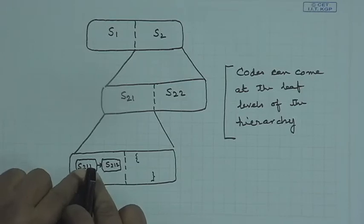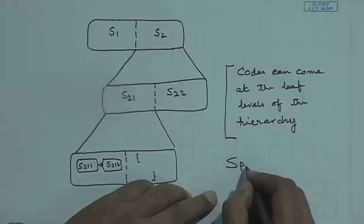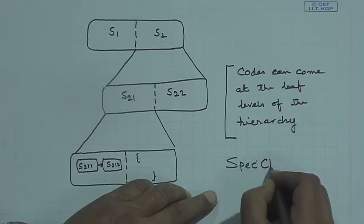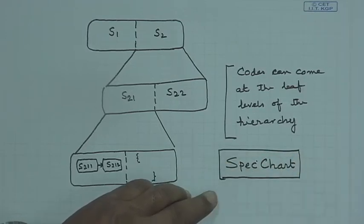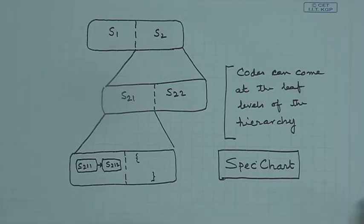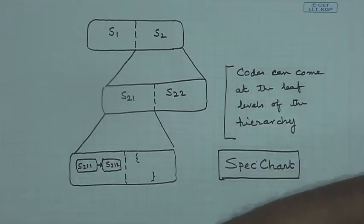The codes can come at the leaf levels of the hierarchy. So ultimately, each leaf can be either a simple state or a piece of code. That is why this is known as Program State Machines. There have been systems based on this idea, and one such system is known as SpecChart.